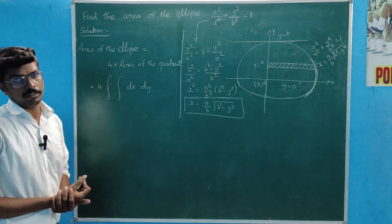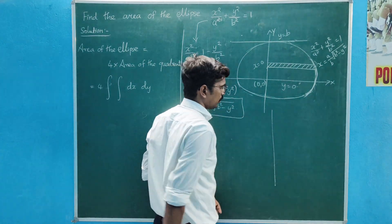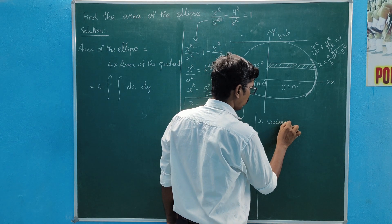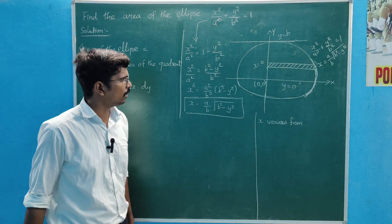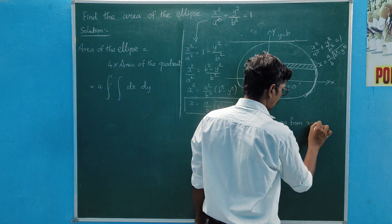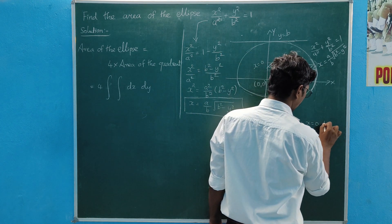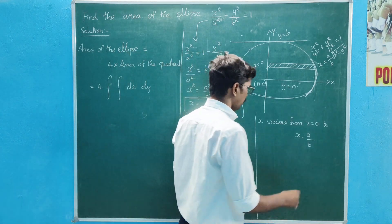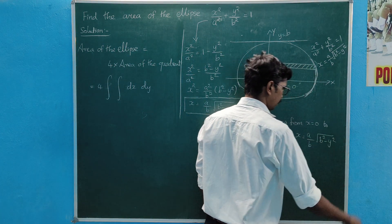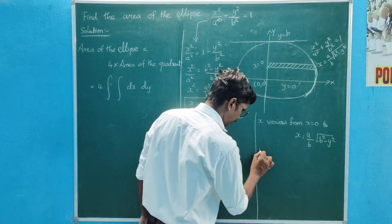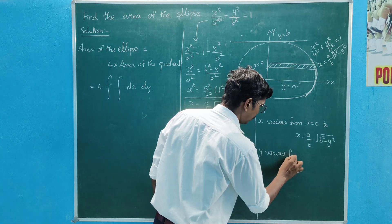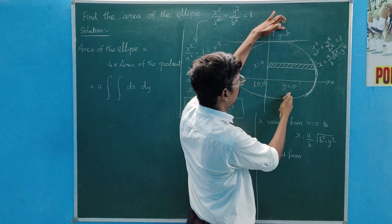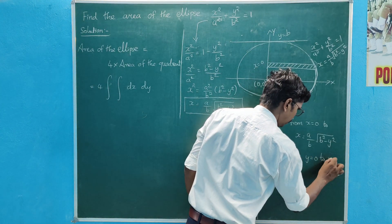The integral has limits. x varies from x = 0 to x = (a/b)√(b² − y²). And y varies from y = 0 to y = b.